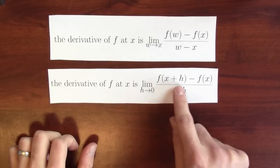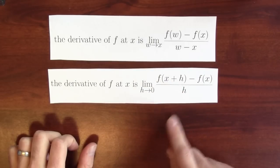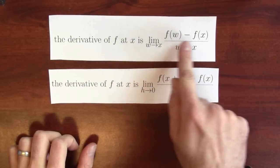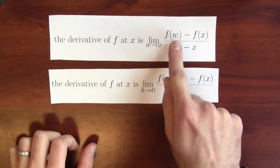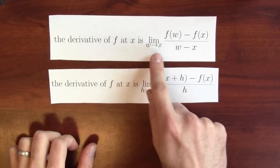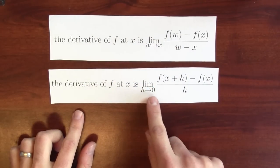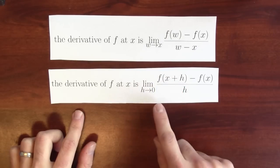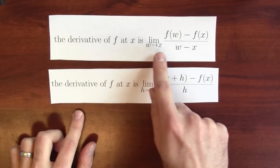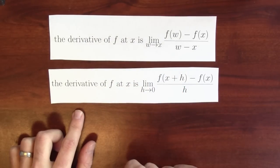And h is measuring exactly how much that input changed by. Here, I'm again measuring the difference of two output values. Here, w is my new output value, which is close to x. Down here, h is just measuring how much I wiggled x by. Here, w is actually just some nearby value of x.